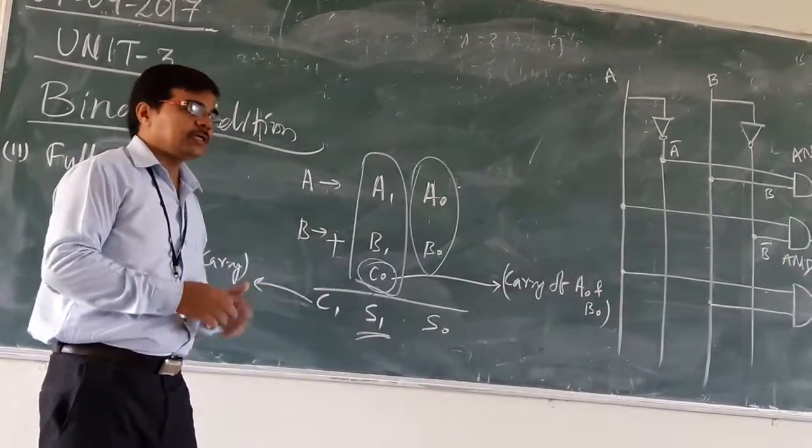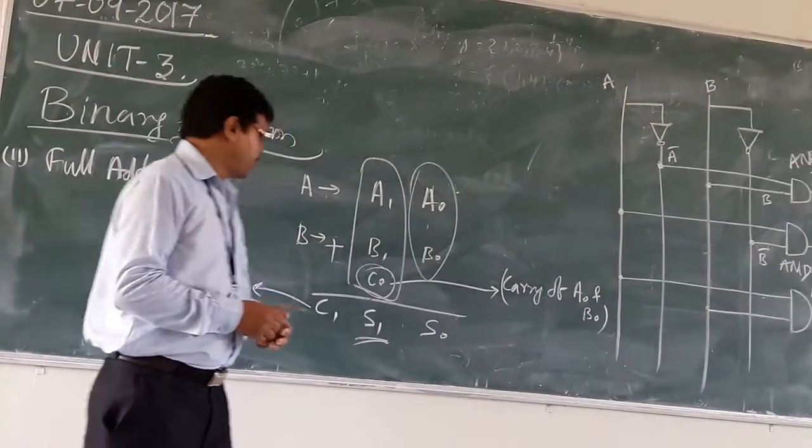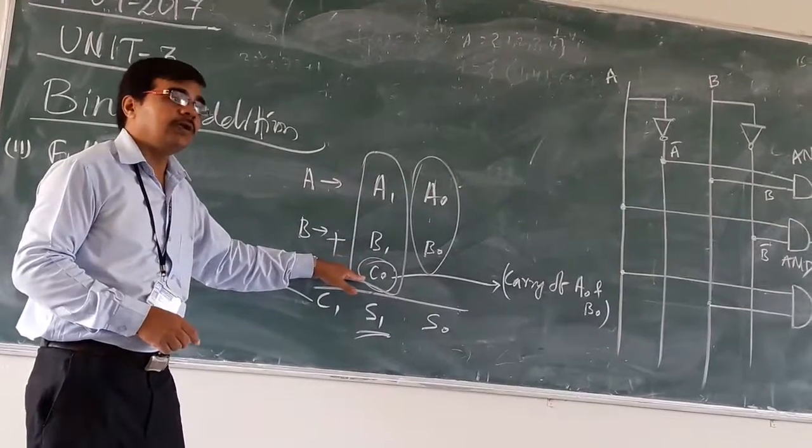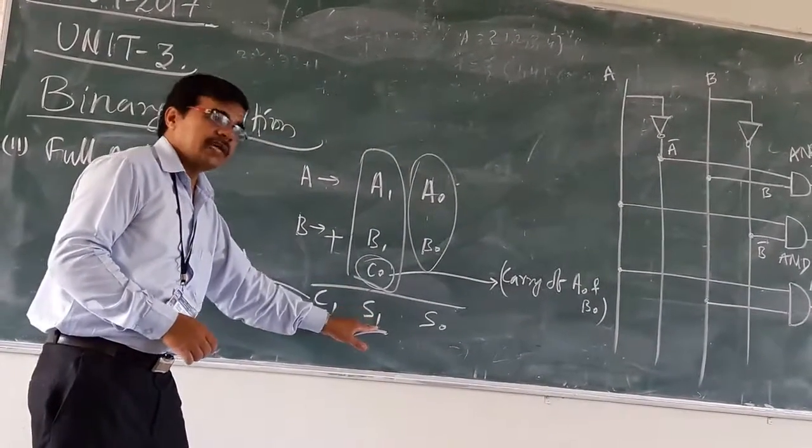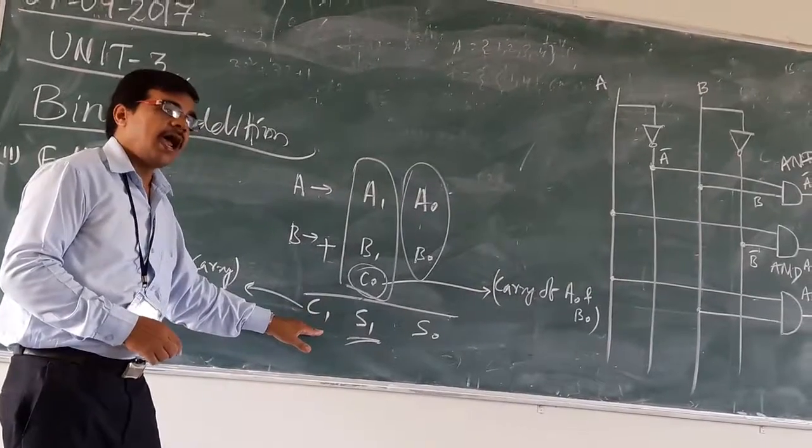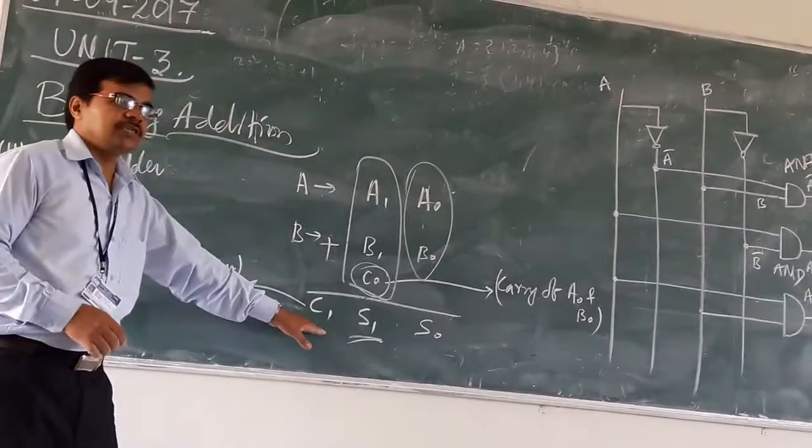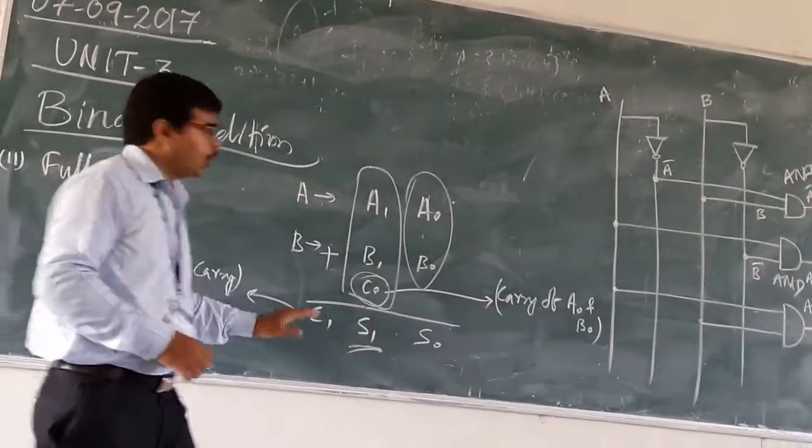So in case of your full adder, you are having A1, B1 and C0 as input. And you are having S1 and C1 as output, where S1 is the sum and C1 is the new carry.